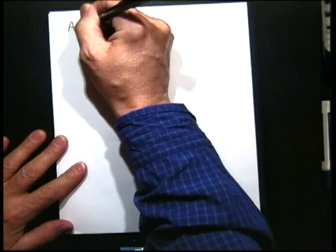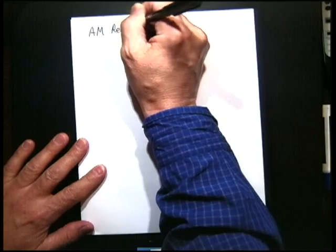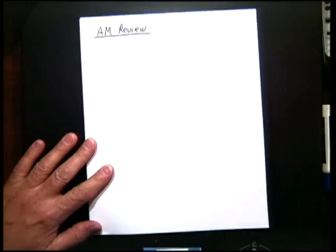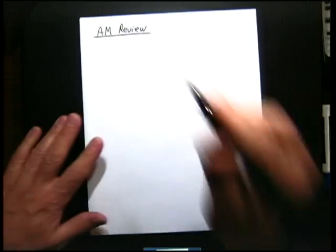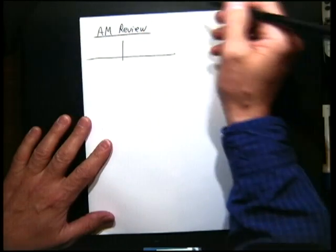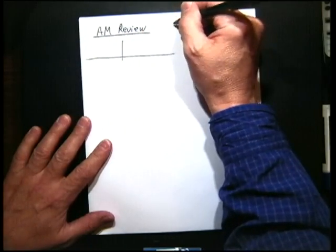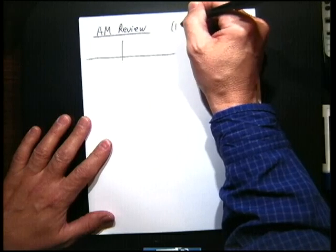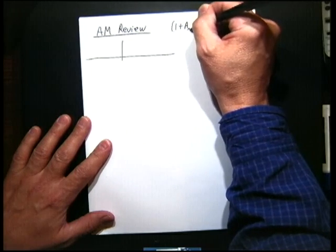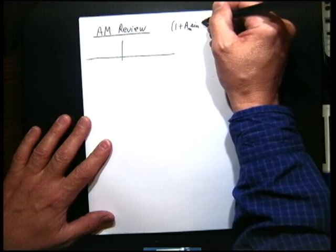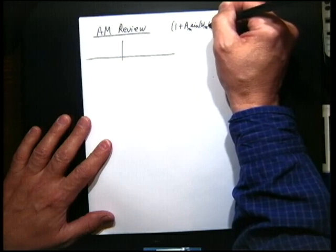So let's go to, first a quick AM review because we talked about AM. Remember that we had that the signal was given by one plus the amplitude of modulation times some sinusoid at the modulation frequency.